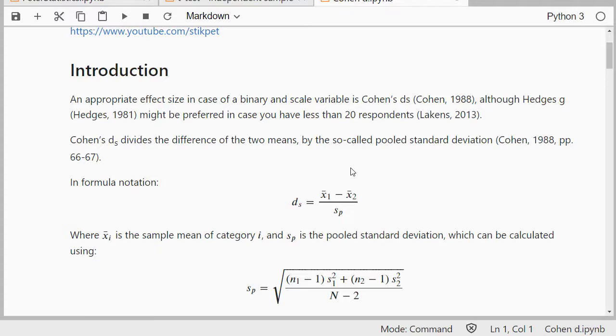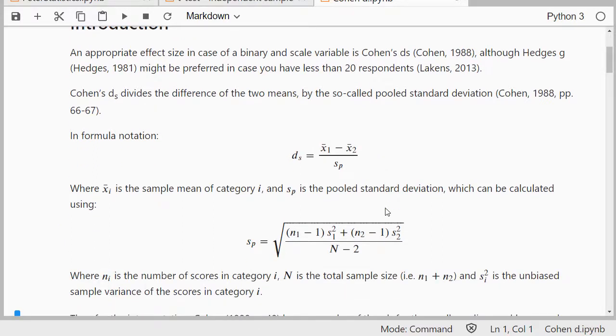Unfortunately I haven't found any package that can calculate this directly, so we'll be going over the formula to calculate it step by step. The formula itself looks like this, where we have the sample mean, basically the mean of each of the two categories, and then divided by the pooled standard deviation.